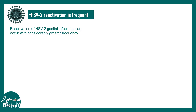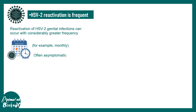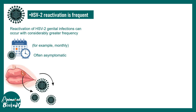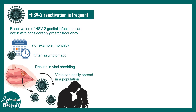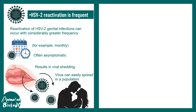HSV-2 reactivation is very frequent and can happen in bouts of a month. Often these are asymptomatic, so people don't notice and the virus can spread during that time. If a reactivation occurs while an individual is having sex or close contact with a partner, that can lead to viral transmission, which is why HSV can propagate silently through a population.